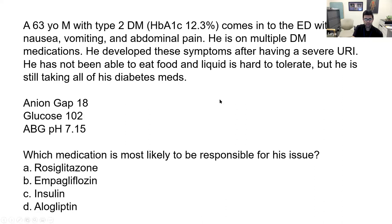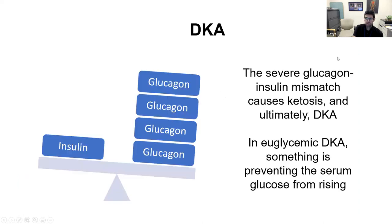The answer here is empagliflozin. So we're going to be talking about euglycemic DKA from SGLT2 inhibitors. But to talk about that, we have to go over what DKA is in the first place.